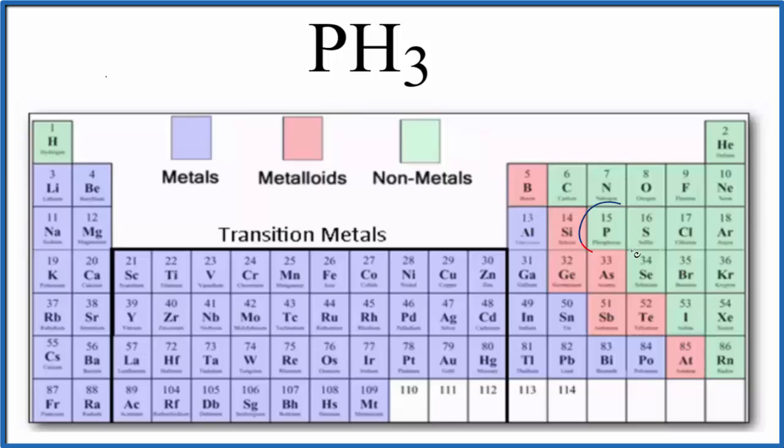When we look for phosphorus on the periodic table, it's right here, it's a non-metal. And hydrogen, even though it's over here with the metals, it's considered a non-metal as well.